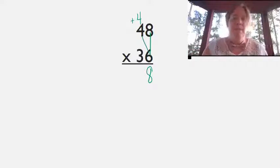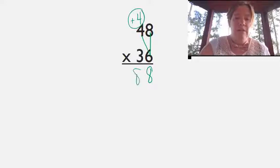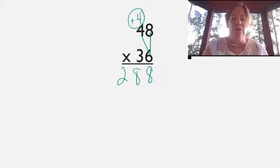Next I multiply my tens. Six times four is twenty-four, plus four is twenty-eight. So my first partial product is twenty-eight.